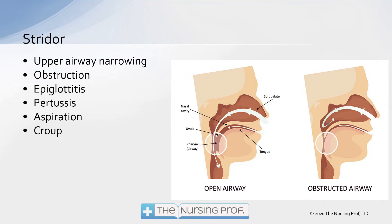Stridor is caused by upper airway narrowing. Just like pursing your lips to whistle — a smaller opening with a lot of air movement — you get a much louder sound. Causes include epiglottitis, pertussis, aspiration, and croup.